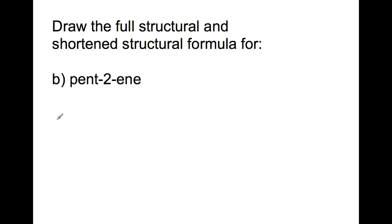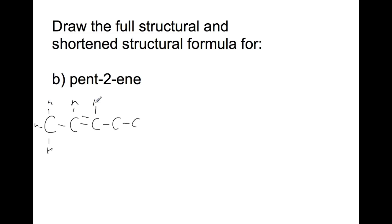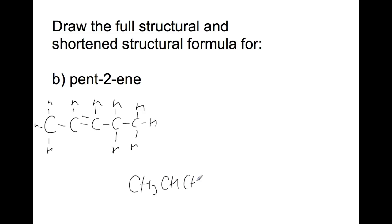For pent-2-ene, draw five carbons with a double bond between carbons two and three, then fill in the hydrogens. The shortened structural formula is: CH3–CH=CH–CH2–CH3.